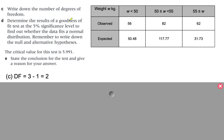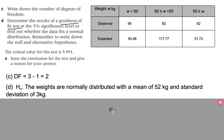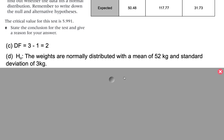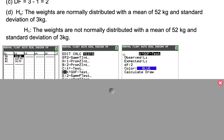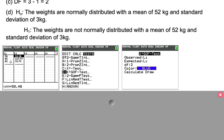Part D asks us to conduct the goodness-of-fit test — the process is the same as for the uniform distribution. First, state the hypotheses: the null hypothesis is that the weights are normally distributed with a mean of 52 kg and standard deviation of 3 kg; the alternative is that they are not normally distributed. Enter the observed values in L1 and expected values in L2 on the calculator, go to STAT > TESTS > goodness-of-fit test, enter the degree of freedom of 2, and click calculate.